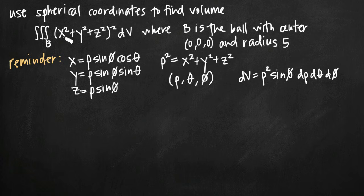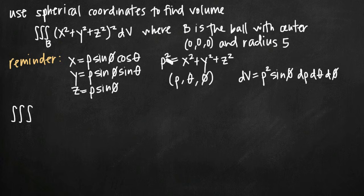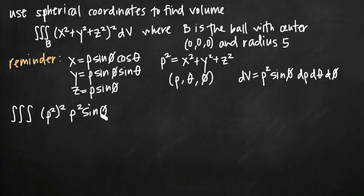The first thing we'll do is convert our integrand, quantity x squared plus y squared plus z squared, all squared, and convert our dV from Cartesian to spherical coordinates. Given our conversion formula, rho squared equals x squared plus y squared plus z squared, so that value converts to rho squared. Since it's squared, we get rho to the fourth. Then our dV converts by adding the extra rho squared sine of phi, giving us rho squared sine of phi d rho d theta d phi.